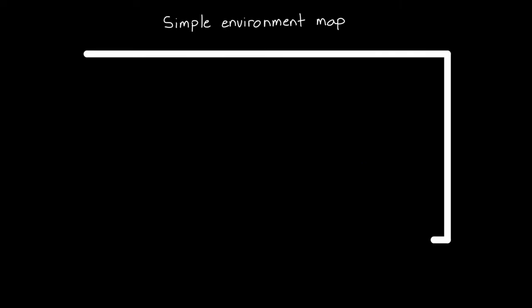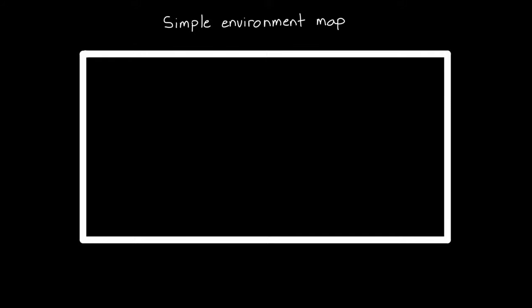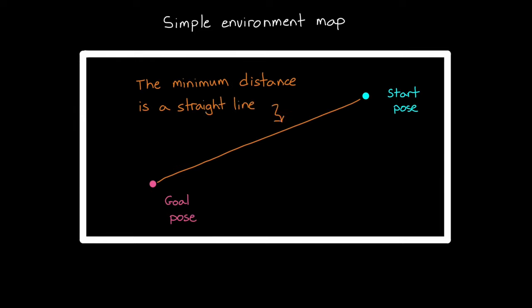Let's get started with a simple map that's similar to the one that we generated in the last video. It's just a rectangle. Assume that the starting pose is up here and the goal pose is over here. A minimum distance solution can be solved for directly by connecting the start and the goal with a straight line, as long as there's no obstacles in the way. Now if the robot moves along this path, it's going to reach the goal in the shortest distance possible.